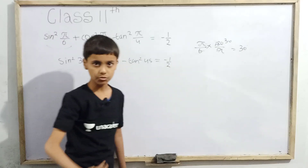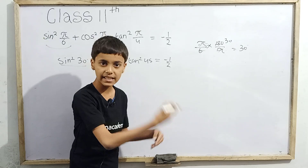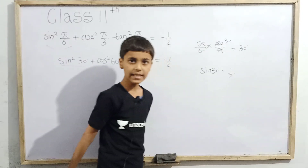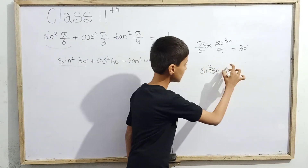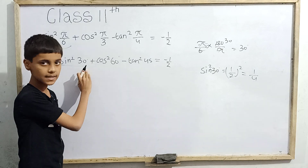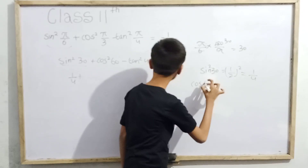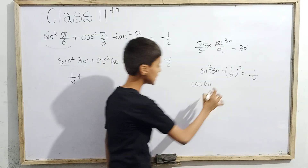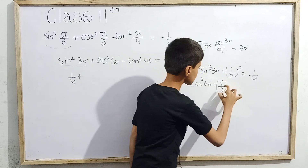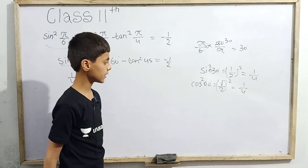We can easily find sin²(30°) using the trigonometric table. sin(30°) = 1/2, so sin²(30°) = (1/2)² = 1/4. Then cos(60°) is also 1/2, so cos²(60°) = (1/2)² = 1/4. So we have 1/4 + 1/4 so far.